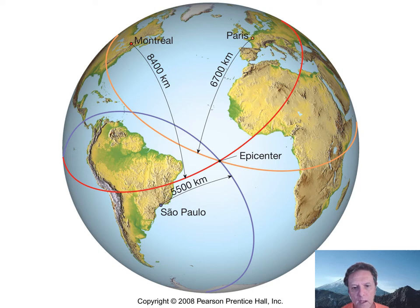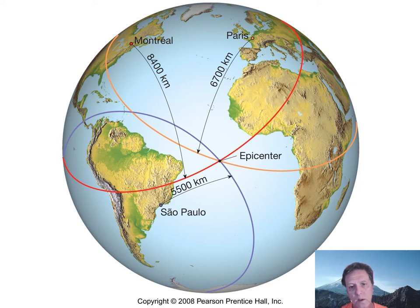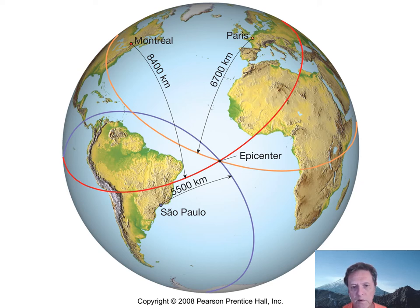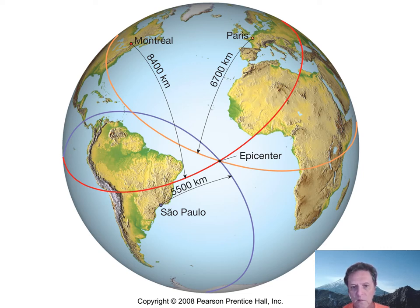We can use this property to find the location of an earthquake. The P-S interval recorded in Paris gives a distance of 6,700 kilometers; a seismograph in Montreal records 8,400 kilometers; from São Paulo, 5,500 kilometers. We plot circles of those radii around each seismograph station, and where those circles intersect, we have triangulated the location of the earthquake.